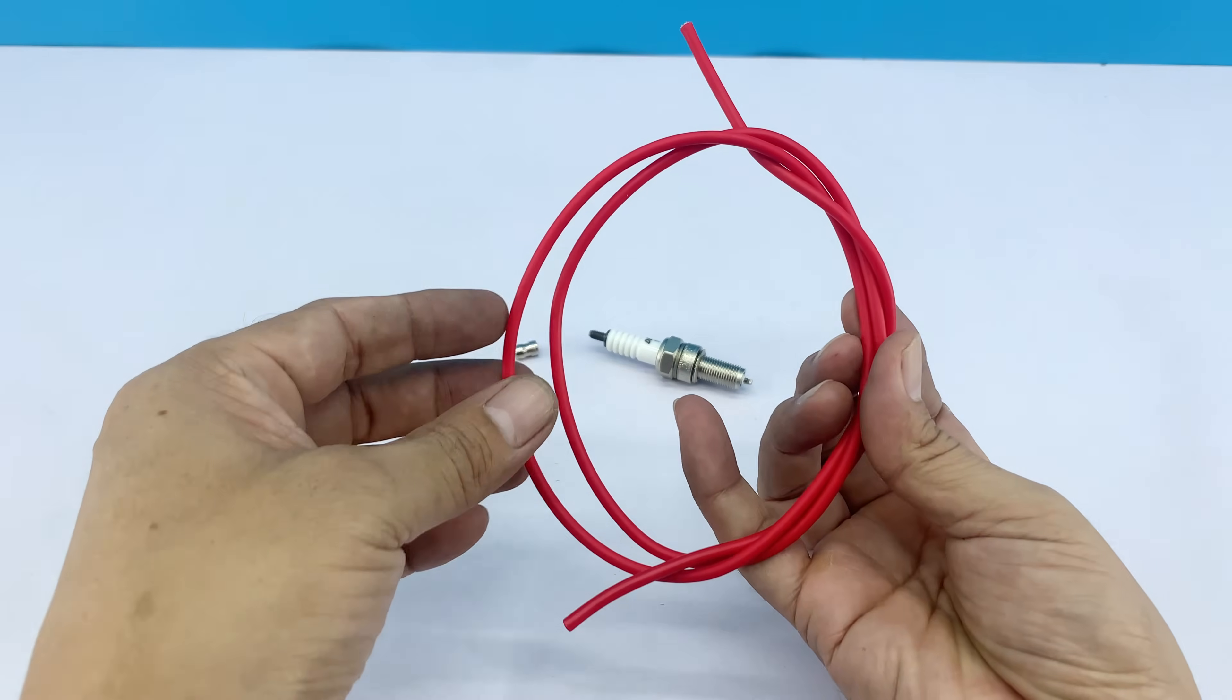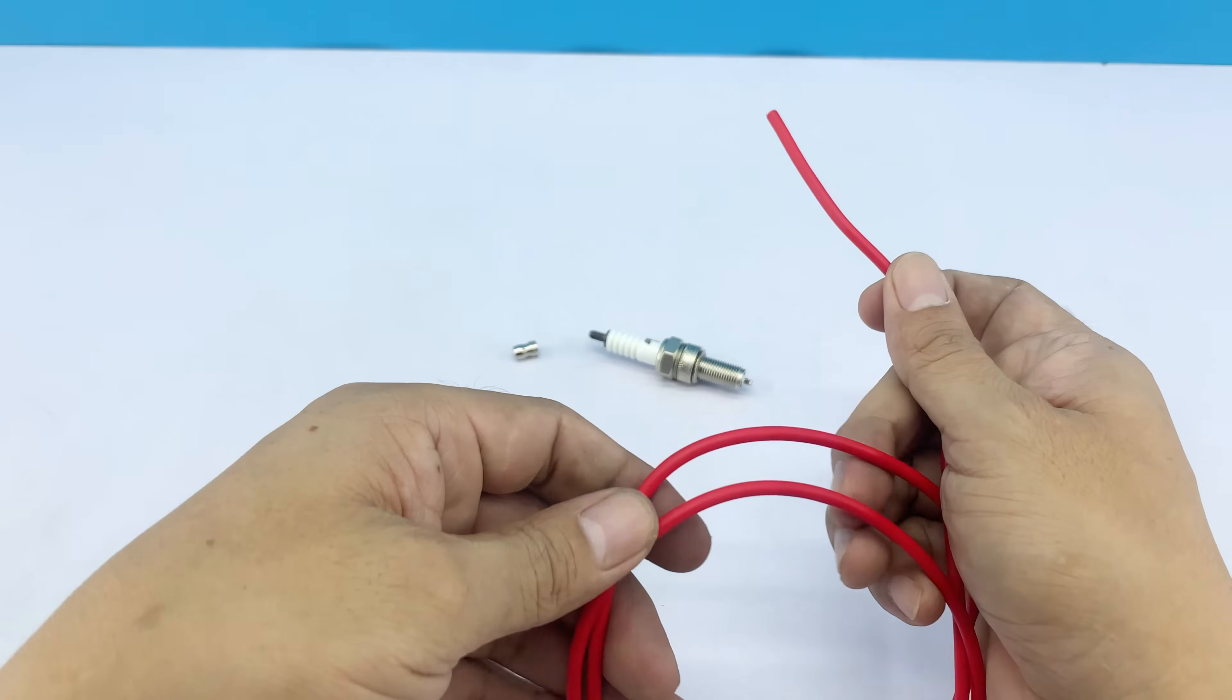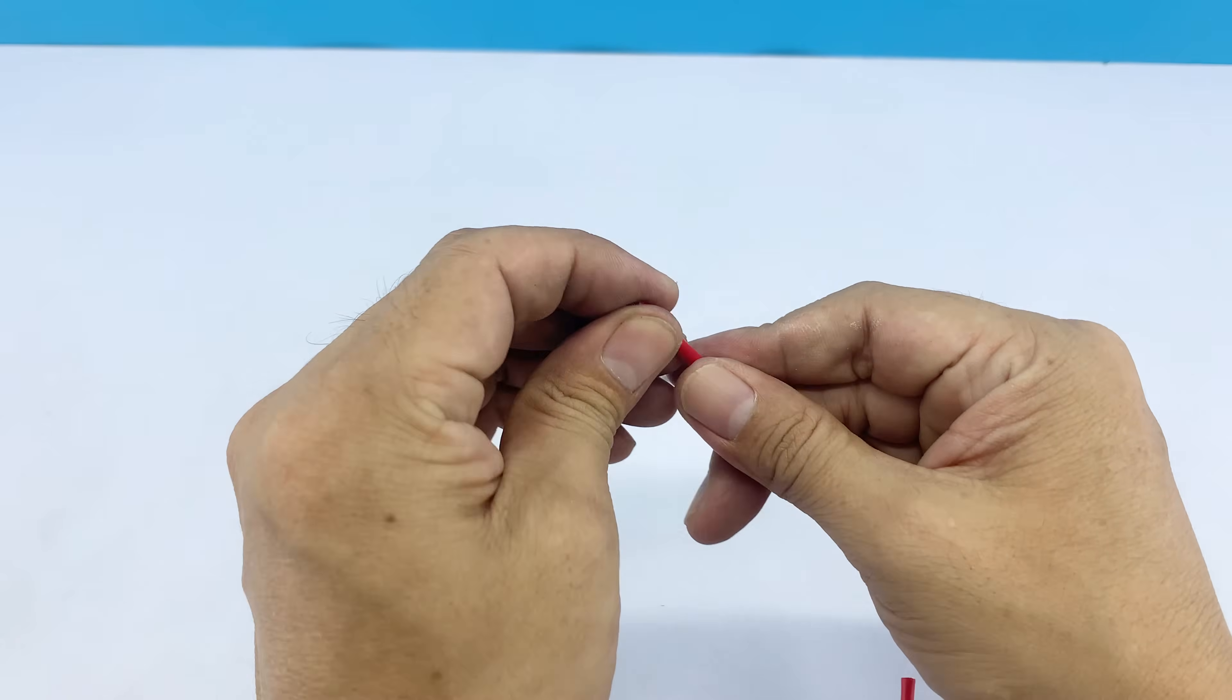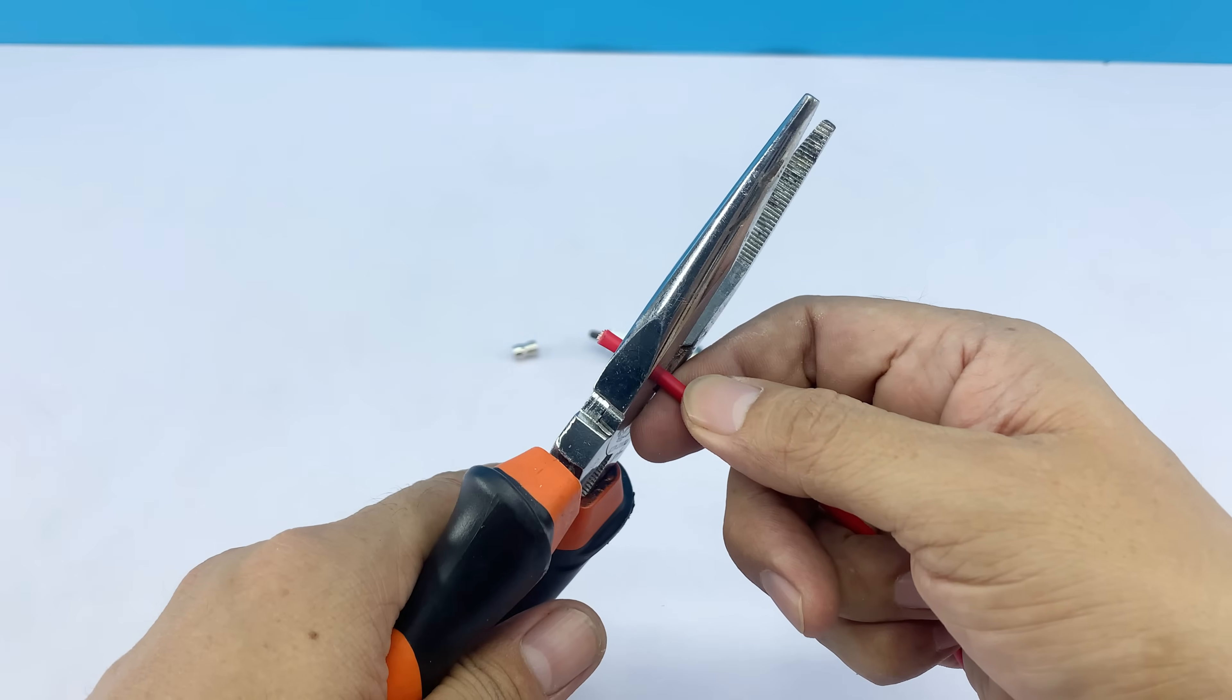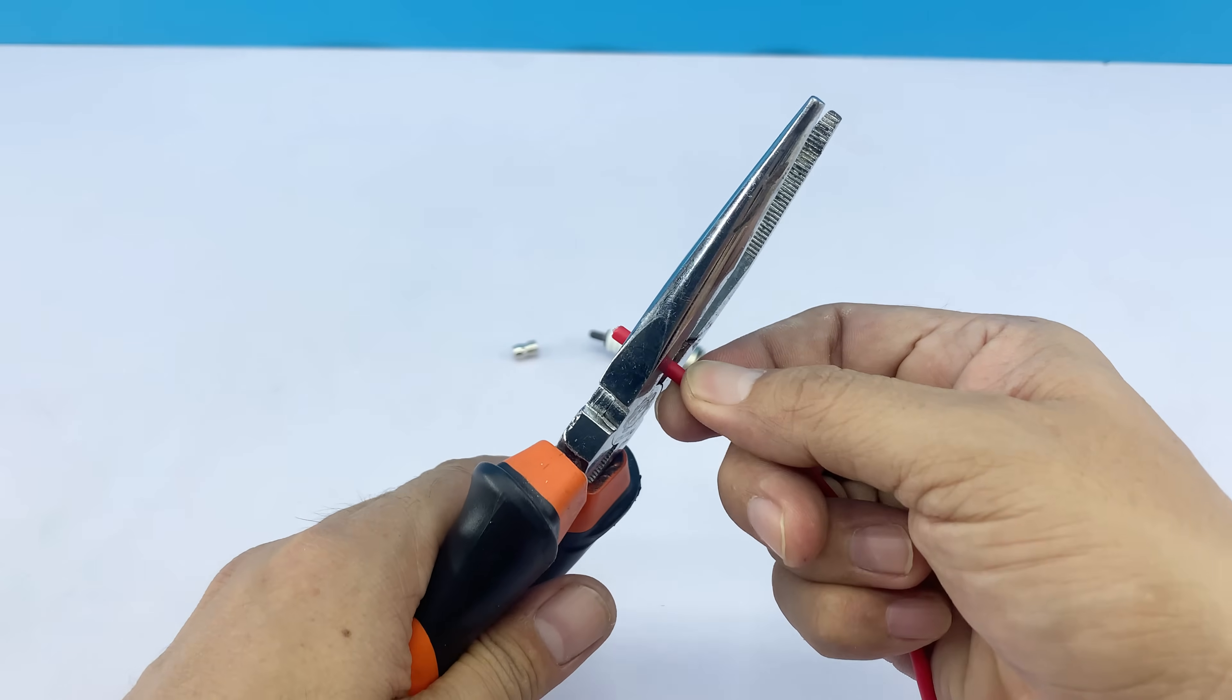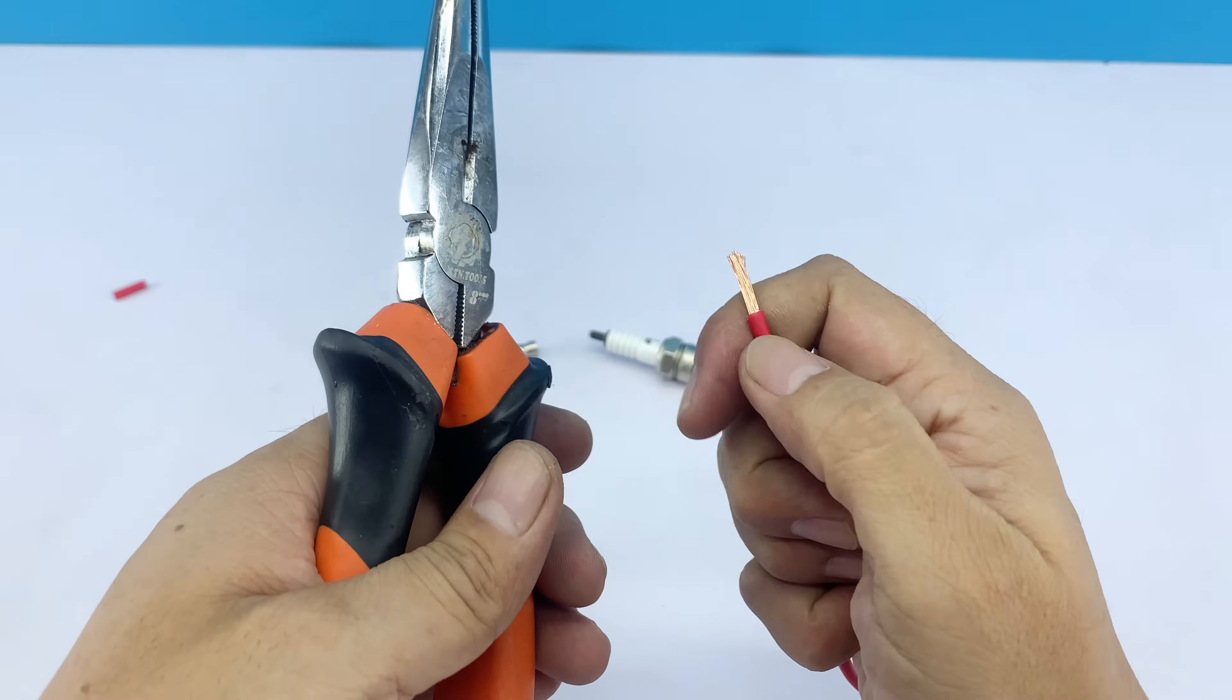First, with a simple electrical wire, I'll connect one end to the threaded part of the spark plug. This part directly contacts the metal and helps conduct electricity for the makeshift welding.